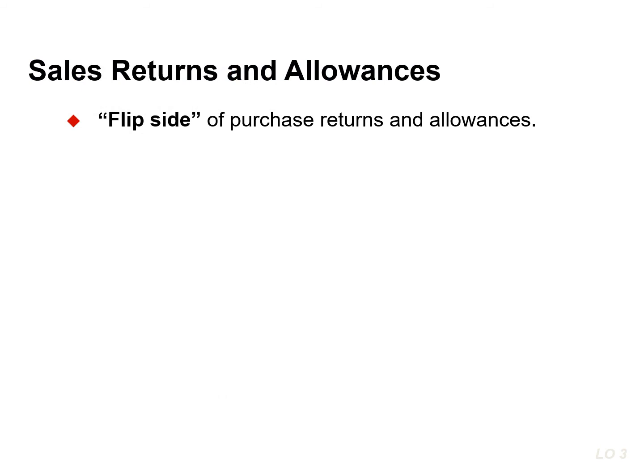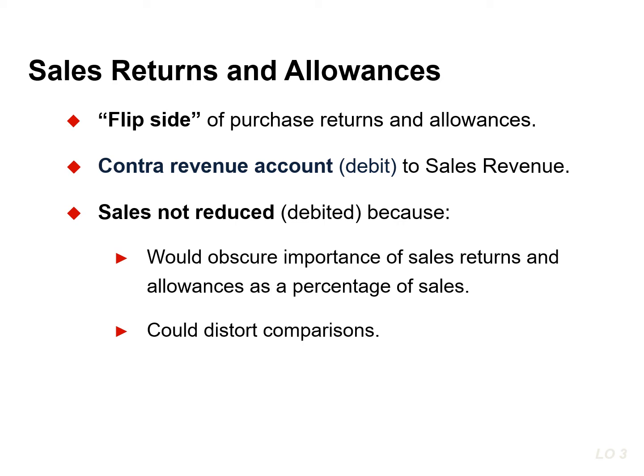We will now look at the flip side of purchase returns and allowances, which the seller records as sales returns and allowances. These are transactions where the seller either accepts goods back from a purchaser — a return — or grants a reduction in the purchase price and allowance so that the buyer will keep the goods. Sales returns and allowances is a contra revenue account to sales revenue, which means it offsets the sales revenue account, and its normal balance is a debit. Companies use a contra account instead of debiting sales revenue to track the amount of sales returns and allowances. This information is very important to management, as excessive returns and allowances suggest problems such as inferior products, inefficiencies in filling orders, and/or mistakes in delivery or shipment of goods.